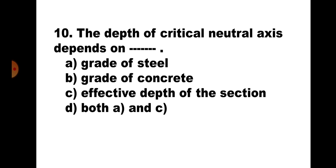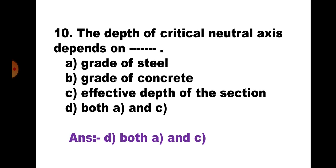Question number ten: The depth of critical neutral axis depends on — (a) grade of steel, (b) grade of concrete, (c) effective depth of section, (d) both (a) and (c). For Fe 415 the critical neutral axis depth is 0.48d — so it depends on grade of steel and also on effective depth d. The correct answer is (d) both (a) and (c).